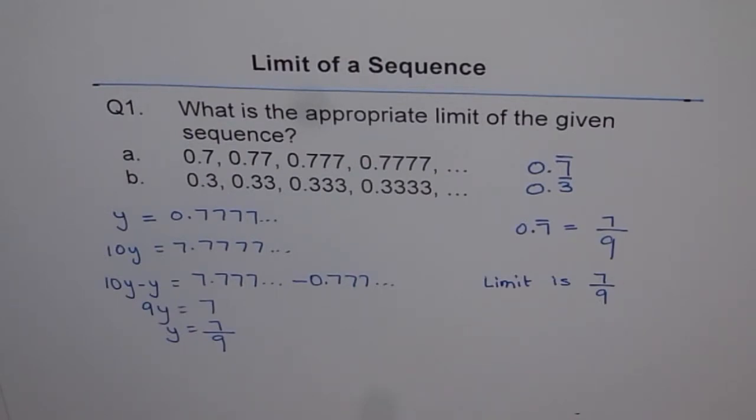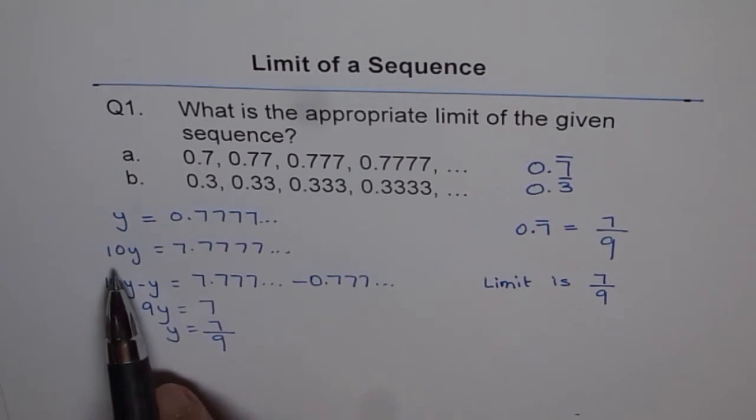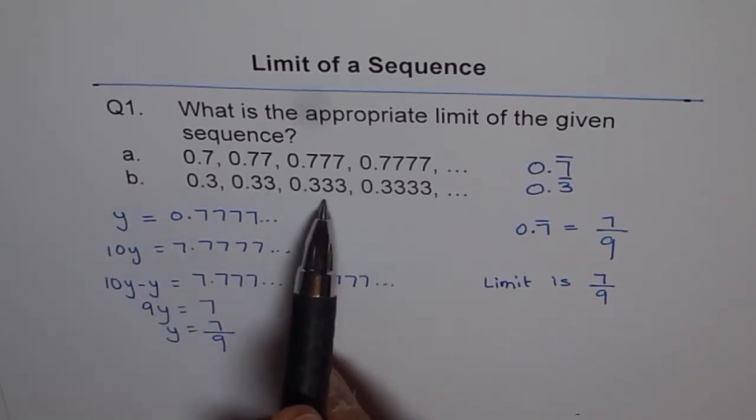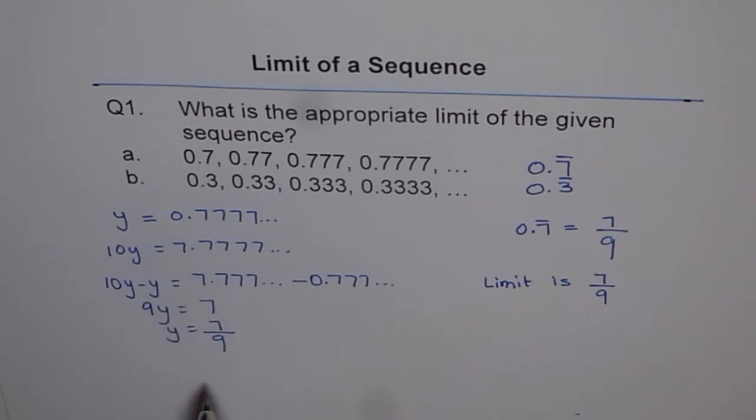This is a very good example of converting recurring decimal numbers into fractions. I like my students to understand and apply this wherever needed. Follow the same process: multiplying by 10 and then subtracting from the original, you can get rid of the recurring part and find the equivalent fraction. These numbers are rational numbers; they can be written as a fraction.